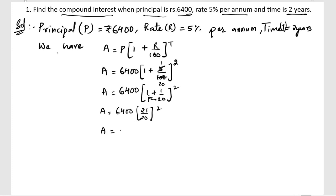So since we are having square, we can write it 2 times 21 by 20 into 21 by 20. We can cancel the zeros, so we can cancel the two zeros.